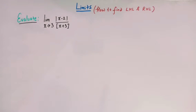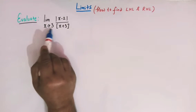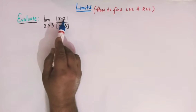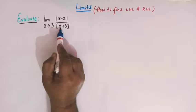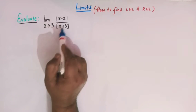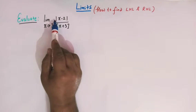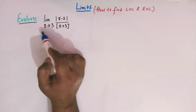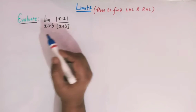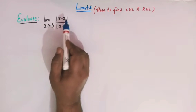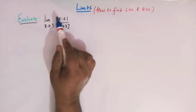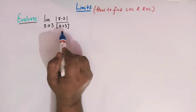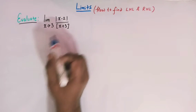Hello viewers. In today's class we are going to discuss an important limit from differential calculus. We have to evaluate this limit: limit x tends to 3 of absolute value of (x minus 2) divided by greatest integer of (x plus 3). In this function, both the absolute value function and the greatest integer function are involved. This is a very important problem for beginners in calculus and will clear many concepts regarding functions and limits.